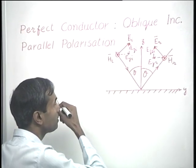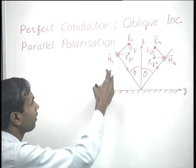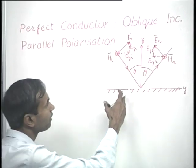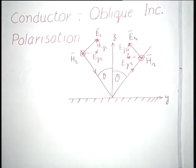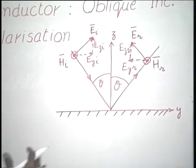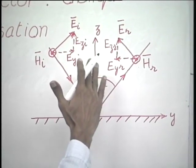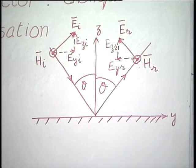Considering the incident electric field as consisting of two components — a y-directed component and a z-directed component — we can determine that the reflected electric field should have a corresponding orientation. By considering the power flow, we find that the magnitudes of the field vectors in the reflected wave should be the same as those in the incident wave. This is the starting point for today's analysis.